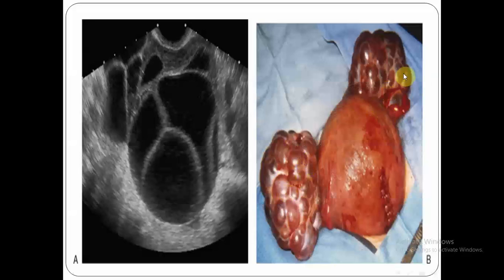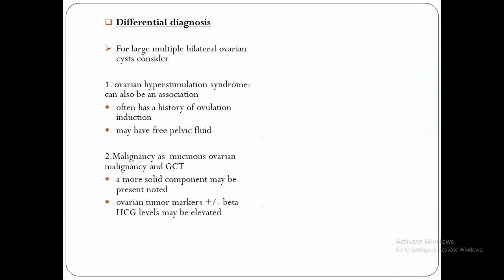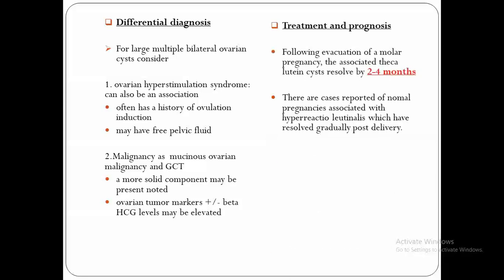This is a typical theca lutein cyst seen in gestational trophoblastic disorder. Differential diagnosis for large multiple bilateral ovarian cysts includes ovarian hyperstimulation syndrome as a complication of ovulation induction, associated with free fluid, and malignancy such as mucinous ovarian malignancy and granulosa cell tumor — requiring MRI and tumor markers. Treatment: the cysts will resolve spontaneously following evacuation of a molar pregnancy within three to four months. Case reports show resolution after delivery in normal pregnancy. Surgical emergency is only indicated if there is ovarian torsion.